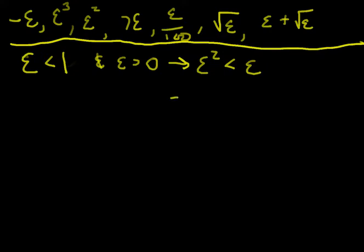And in fact I can do it again. If I take this inequality, I can still multiply by epsilon. This tells me that epsilon cubed is less than epsilon squared, which from the above line is less than epsilon. So we already have a relationship here, just using that first rule — the fact that epsilon is less than one. Multiplying both sides by epsilon gives epsilon squared less than epsilon, and multiplying again gives epsilon cubed less than epsilon squared, which is less than epsilon.